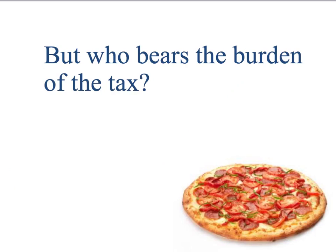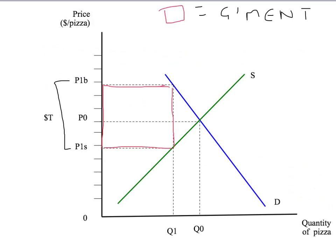That revenue must have come out of someone's pocket — it must have come out of the buyer's pocket, or the seller's pocket, or both. In other words, we want to look at who bears the burden of the tax. Here we've got our equilibrium with the tax in place, and the government's revenue is given by the red rectangle — the size of the tax times the quantity traded after the tax is in place.